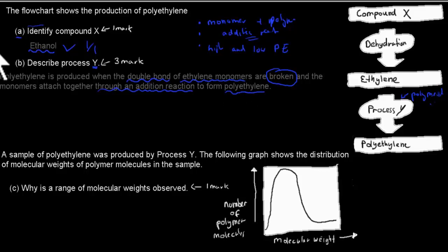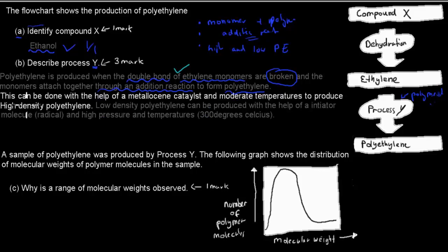So mention the word addition reaction or addition polymer somewhere in your answer. And then go briefly describe both high-density and low-density polyethylene and how these get produced. Again, just briefly. And that's where FIAS gets you three marks. So first I wrote polyethylene is produced when the double bond of ethylene monomers are broken.